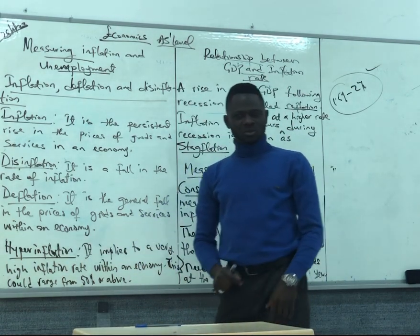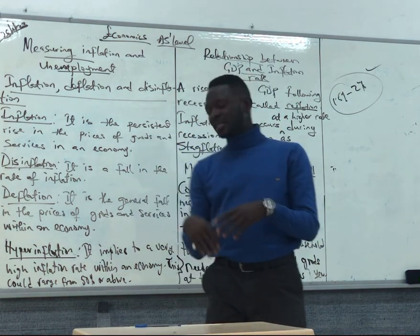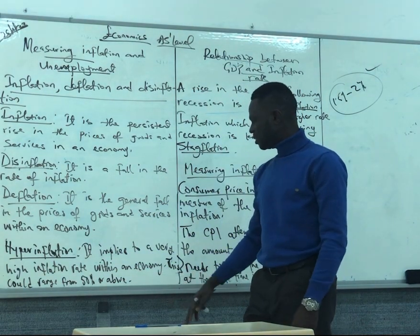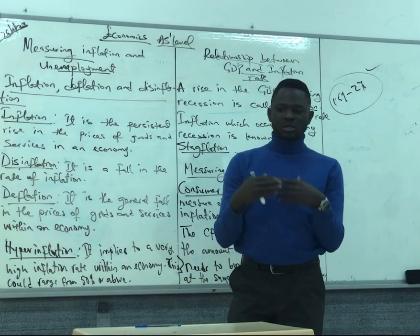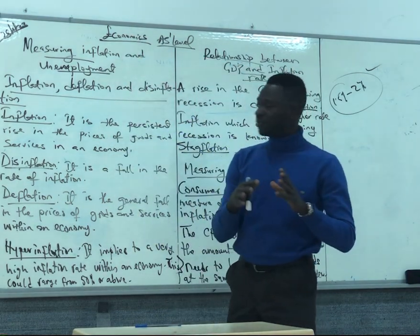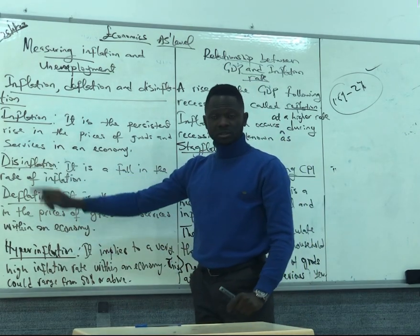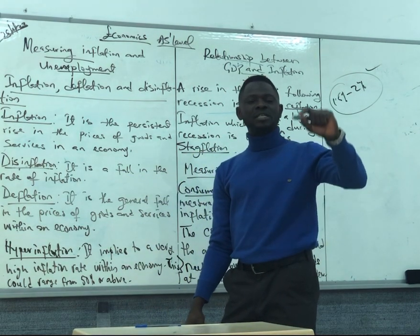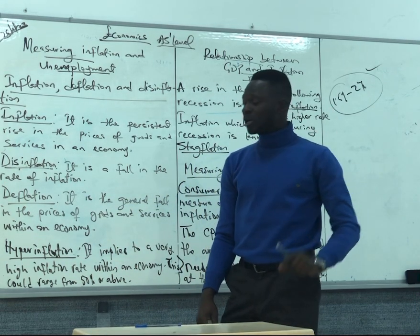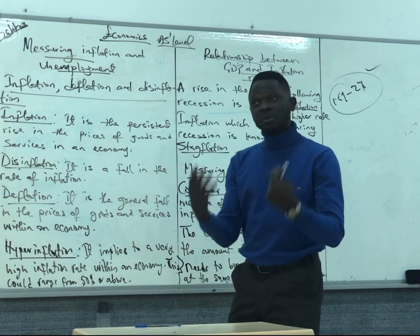Then we have hyperinflation. When we talk about hyperinflation, it means the inflation rate is so high — 50% and above. That is hyperinflation. To recap: inflation is the percentage rising price of goods and services; disinflation is when the inflation rate starts falling; deflation is a fall in the general price level; and hyperinflation is when the inflation rate is 50% and above.